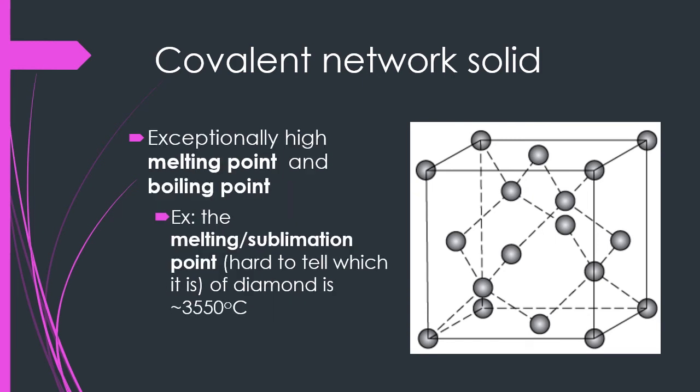Covalent network solids also have exceptionally high melting and boiling points — much, much higher than you would see for a metal or an ionic compound usually. For example, the sublimation point for diamond is in the three thousands degrees Celsius, whereas melting points for most metallic and ionic compounds will be in the upper hundreds or around a thousand.